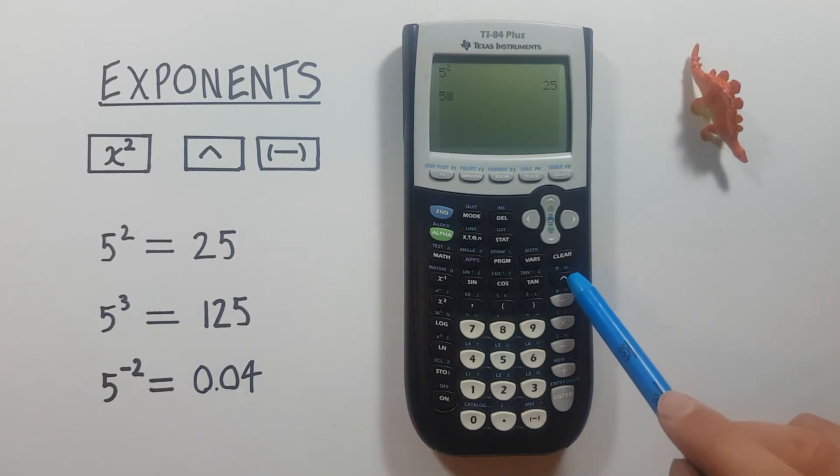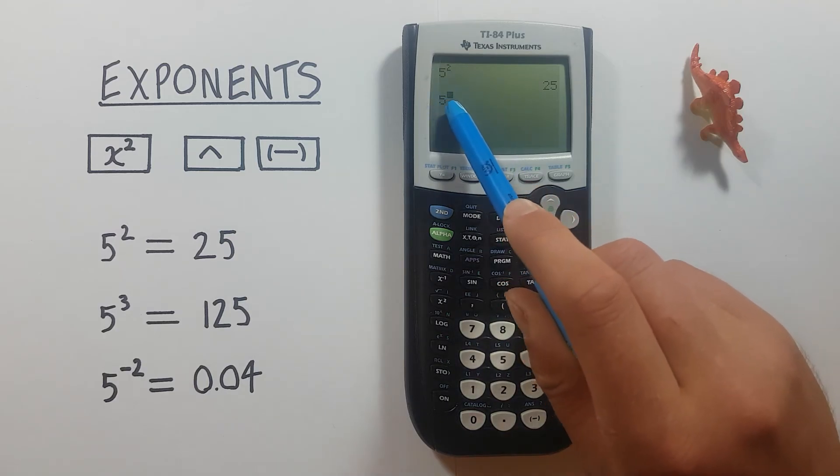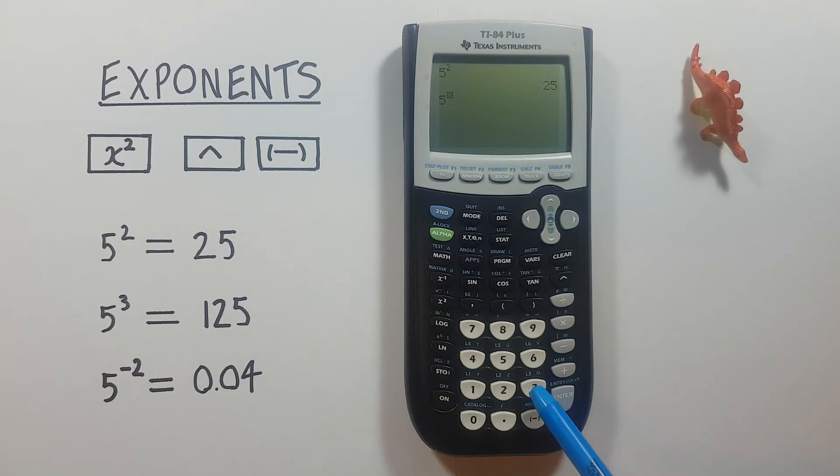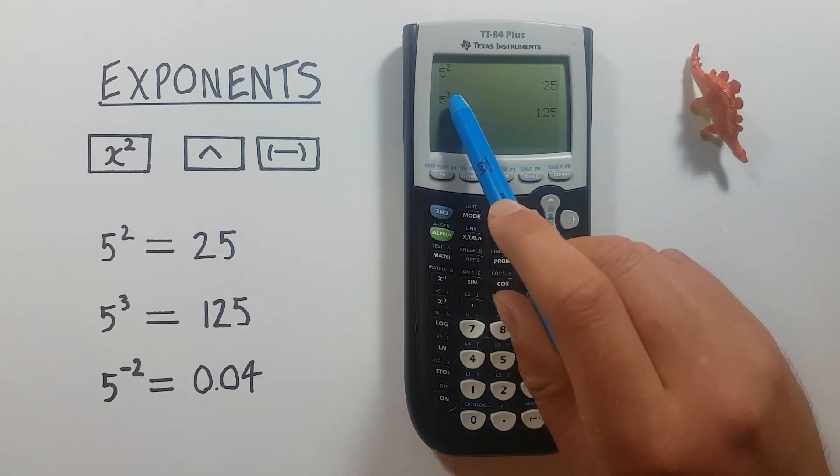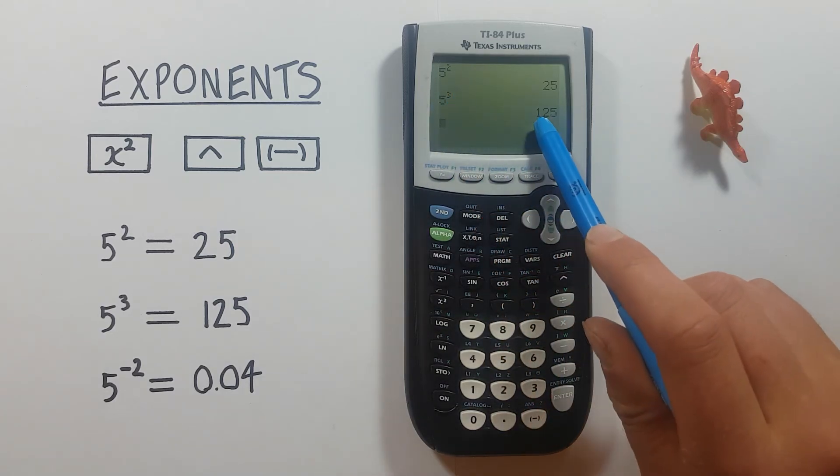Then the up arrow or caret key. You'll see we now have an open box where our exponent would be. We just enter our exponent of 3 and press enter. And we get 5 to the power of 3 is equal to 125.